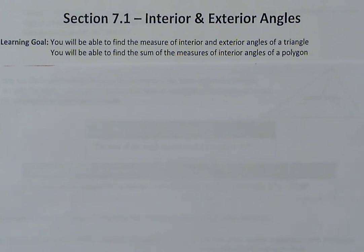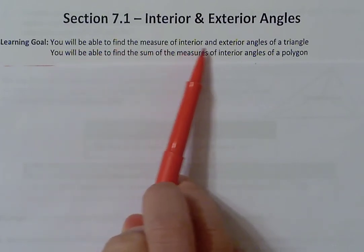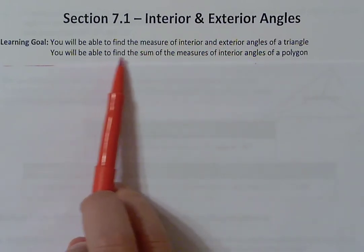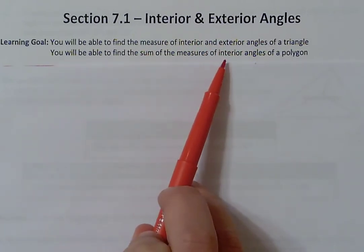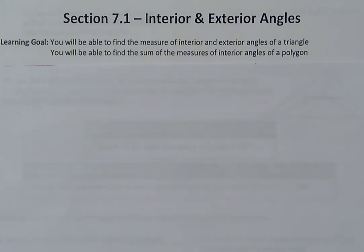Hey class, Mr. Hange here. For today's lesson we're going to be taking a look at section 7.1, which is going to deal with interior and exterior angles. We have two learning goals: you will be able to find the measure of interior and exterior angles of a triangle, and you will be able to find the sum of measures of interior angles of a polygon. So we're going to look at the interior and exterior angles of different shapes and what relationship we find and know about those.